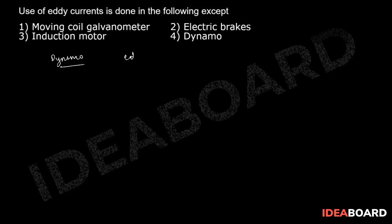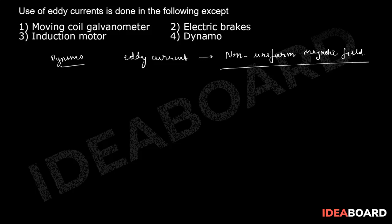Eddy currents are related to non-uniform magnetic field. Non-uniform magnetic field is the primary cause for eddy currents. All options except dynamo can have a non-uniform magnetic field, but in the dynamo there is a separate case. So the right answer is the fourth choice — dynamo.